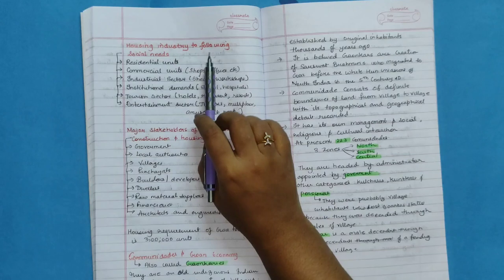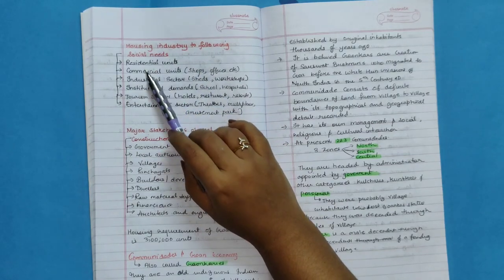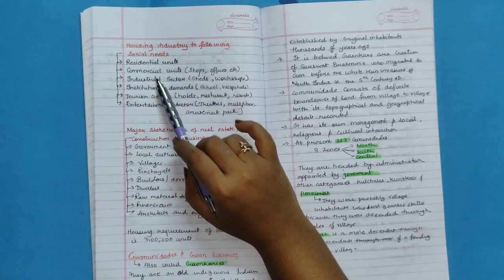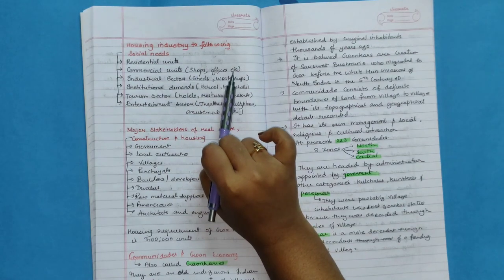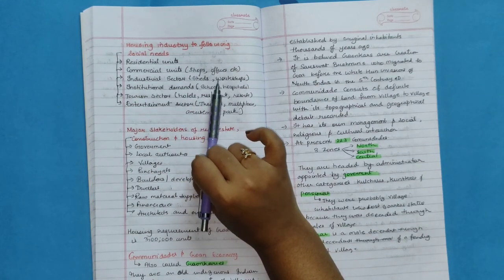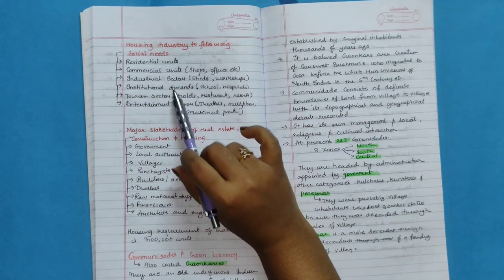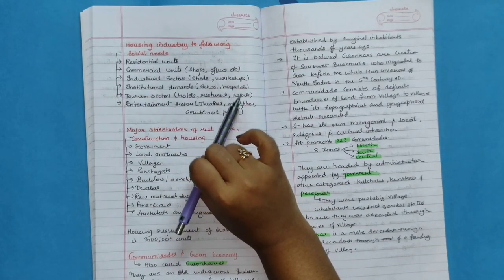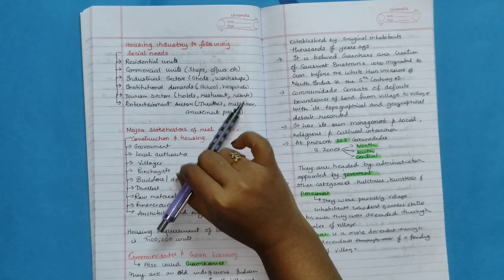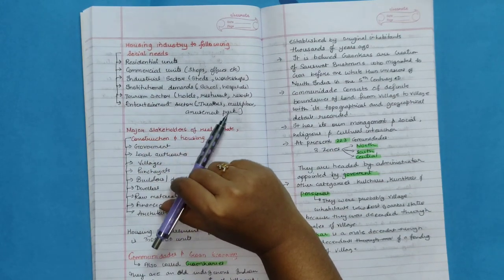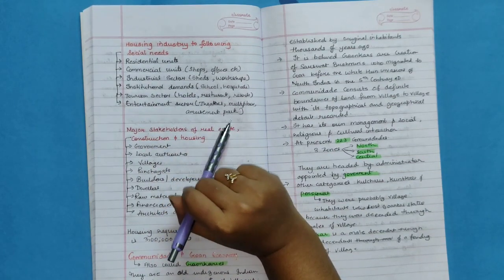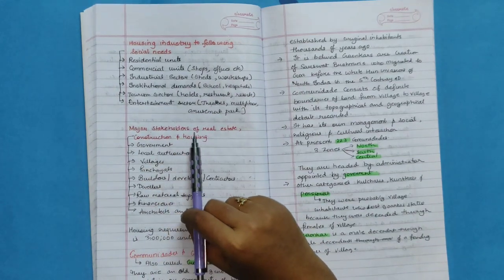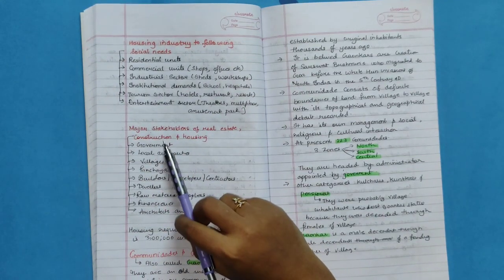Housing industries fulfill following social needs: Residential unit, commercial units like shops, offices, industrial sector like sheds, workshops, institutional demands, schools, hospitals, tourism sector, hotels, restaurants, resorts, entertainment sector like theaters, multiplexes, amusement parks.